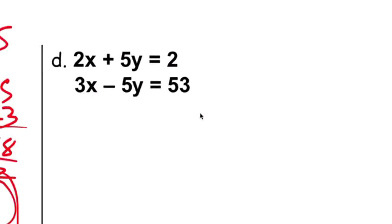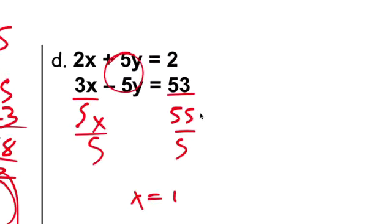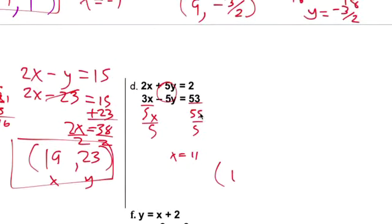Well, this one's easy. That eliminates that one. And that gives you 5x. That gives you 55. And divide by 5. You get x is 11. So x is 11. I love this because I can do, hopefully, I probably made a mistake because I'm doing it so fast. 2x plus 5y equals to 2. x is 11. So 11 here, that's 22 plus 5y equals to 2.